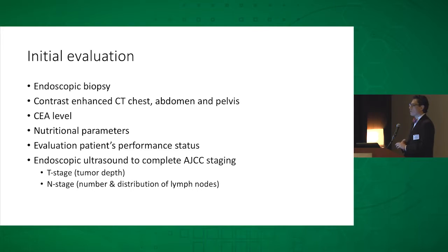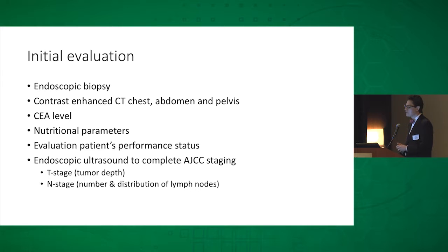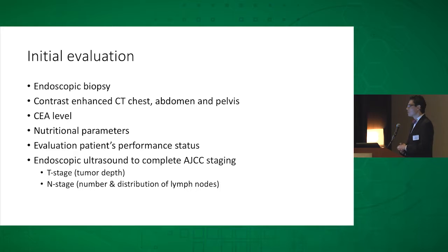I'd like to go over the initial evaluation for gastric cancer patients because that's really pretty important. If you're going to apply neoadjuvant therapy, you have to know if it's an appropriate patient. This initial evaluation is going to include an endoscopic biopsy — anybody who's ever going to get neoadjuvant therapy for gastric cancer or any gastrointestinal epithelial tumor has to have a biopsy before the medical oncologist will administer the first drop of chemotherapy. The evaluation should also include a contrast-enhanced CT scan not just of the abdomen and pelvis but looking for metastatic disease in the chest.